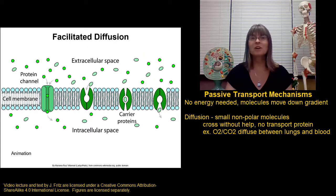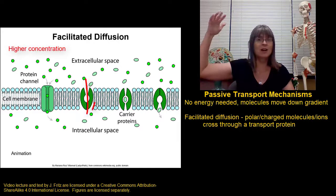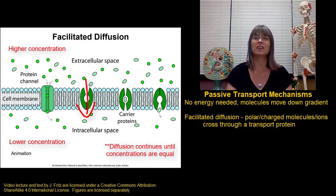That brings us to facilitated diffusion, which is basically diffusion with a little bit of help. In facilitated diffusion, we use a transport protein to provide an opening that allows molecules to move from one side of the membrane to the other, moving down their concentration gradient. So the molecules are still going to move from areas of high concentration to areas of low concentration, but we give them a tunnel that they can go through.